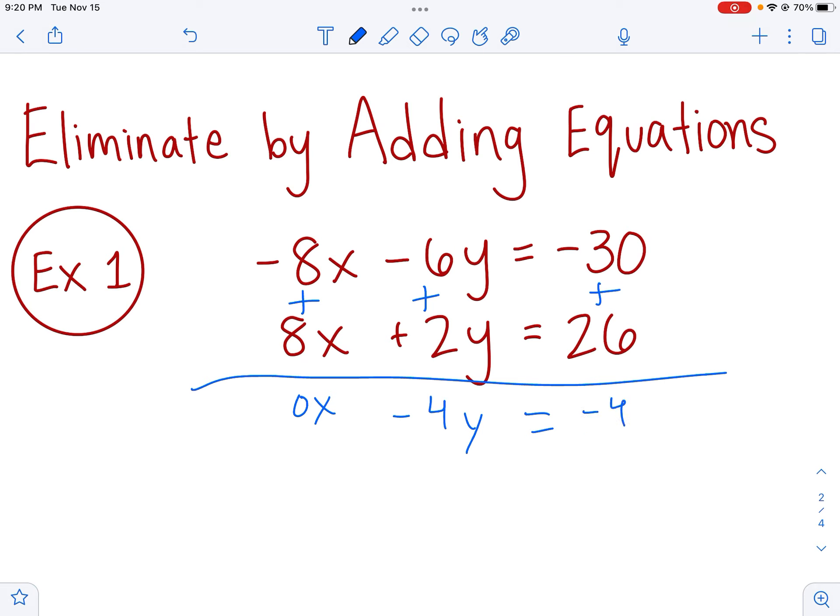The reason we want to do that is because it eliminates one of our variables. This right here, 0x, is nothing, right? 0 times x is 0, and when you add 0 to negative 4y, you just get negative 4y. And so that step of adding my equations and getting rid of a variable is called elimination. It's very helpful because now I only take one step to solve my equation for y. I just divide by negative 4. And voila, I got that y is 1. Hooray! I already got one of my variable values.